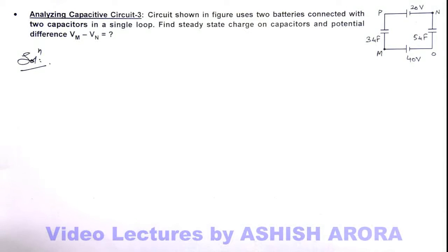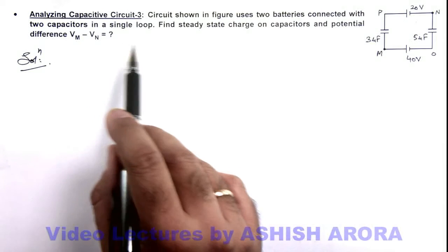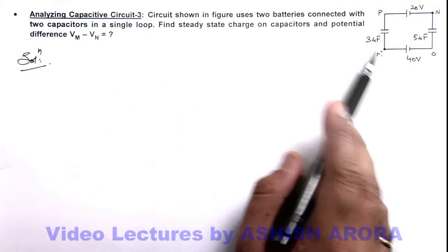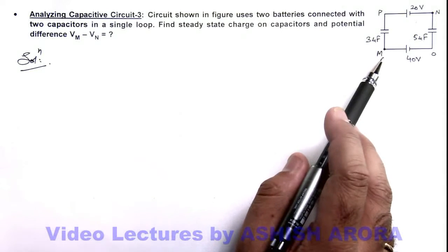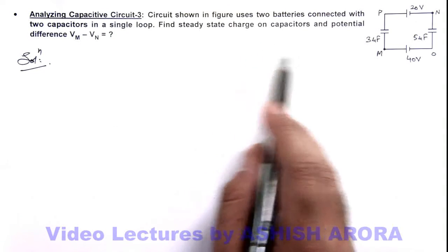In this illustration we'll analyze another capacitive circuit. This figure shows two batteries connected to two capacitors in a single loop, and we are required to find the steady state charge on capacitors.